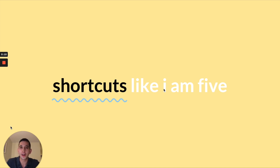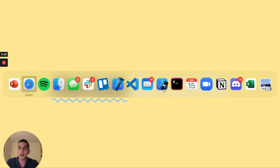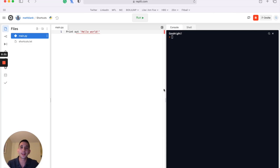As a self-taught developer, when I first started out I was pretty slow. There was a lot of dragging and dropping, a lot of clicking, copying and pasting — it was just really inefficient. Now that I've learned a lot of these shortcuts that I'm going to teach you today, I've become a much better, more efficient, and stronger developer. I'm hoping you can take some of these skills and apply them to your own code.